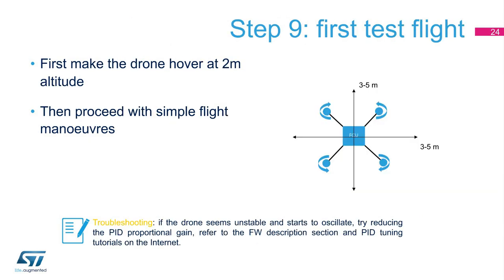Proceed with your first test flight in an open area with no one in the immediate vicinity after you have followed all the safety procedures during setup and completed the arming procedure. First, make the drone hover at 2 meters altitude and ensure that it remains stable. Then proceed with simple flight maneuvers, like forming a cross, at 2 to 3 meters altitude. Be careful: if the drone seems unstable and starts to oscillate, try reducing the PID proportional gain. Refer to the Firmware Description section and PID tuning tutorials on the internet.